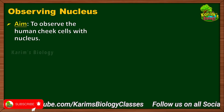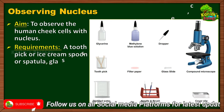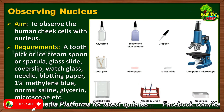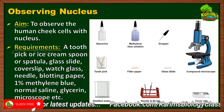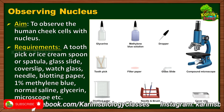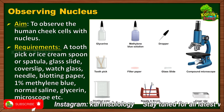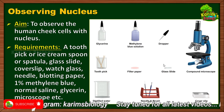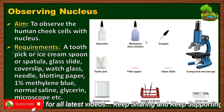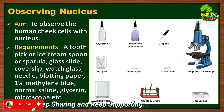Now, what are the requirements? Without the requirements we cannot proceed with the experiment. A toothpick, or ice cream spoon, or spatula is required. A glass slide and a glass lid are required, along with a needle and a brush. Blotting papers or filter papers are required, and methylene blue solution is required because we have to stain the cells.